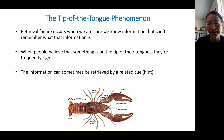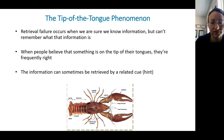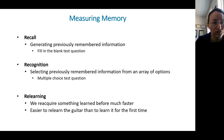Welcome back everyone. Last class we started the chapter on memory and we learned about the different kinds of memory and how psychologists study retention of memory. There are three main ways: recall, recognition, and relearning.